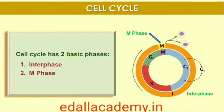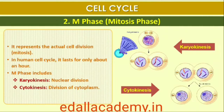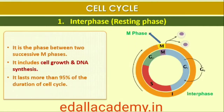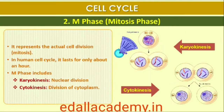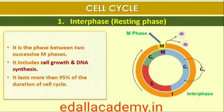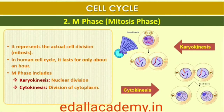The cell cycle is divided into two basic phases: Interphase and M-Phase (Mitosis Phase). The M-Phase represents the phase when the actual cell division or mitosis occurs, and the interphase represents the phase between two successive M-Phases. In the 24-hour average duration of the cell cycle of a human cell, cell division proper lasts for only about an hour. The M-Phase starts with nuclear division — the separation of daughter chromosomes, karyokinesis — and usually ends with division of cytoplasm, cytokinesis.